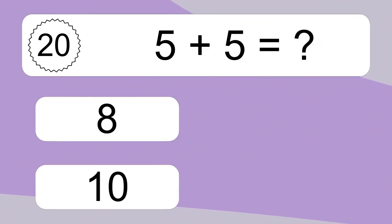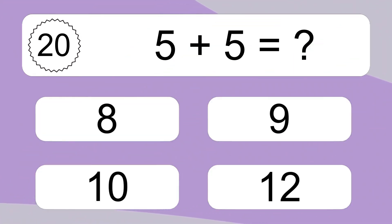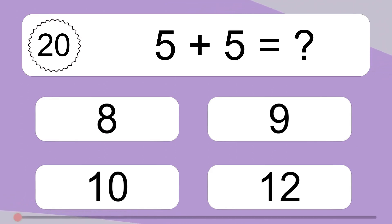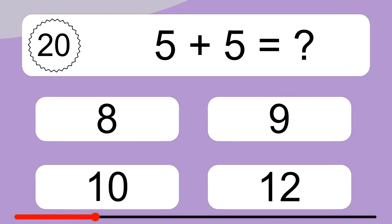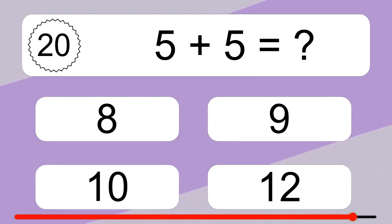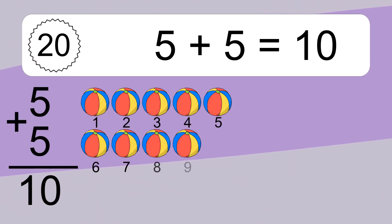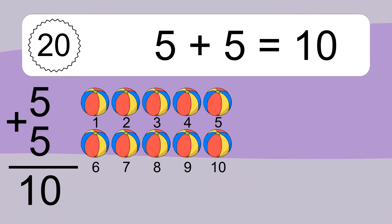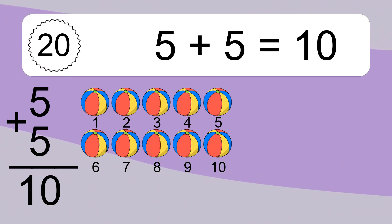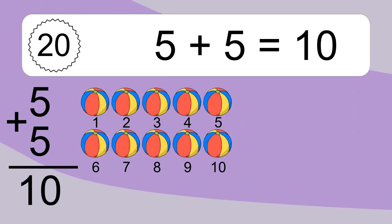5 plus 5 equals 10. Let's count it. 1, 2, 3, 4, 5, 6, 7, 8, 9, 10.